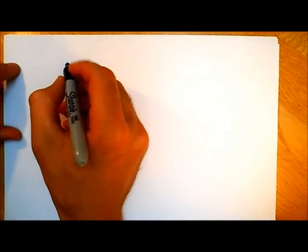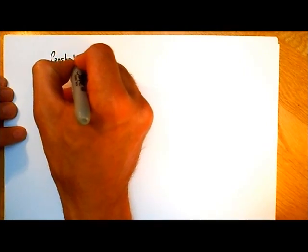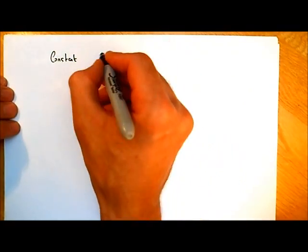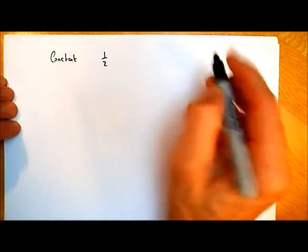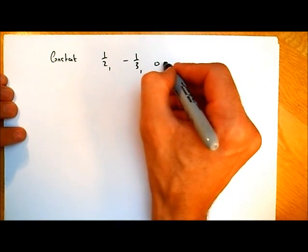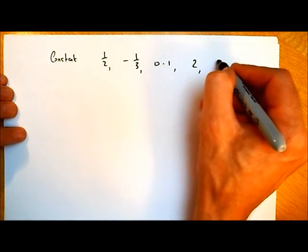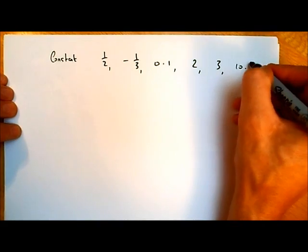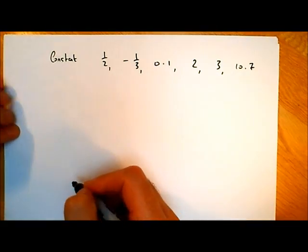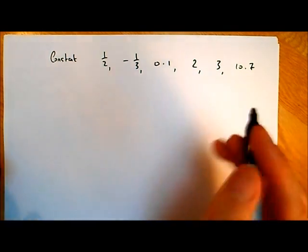There's one other thing to look at in this video: differentiating a constant. A constant is any number — 1 over 2, minus 1 third, 0.1, 2, 3, 10.7 — these are all constants. And when we differentiate a constant, we get 0.